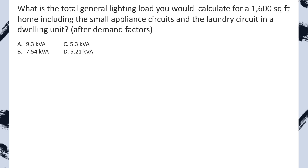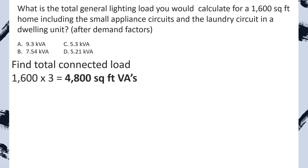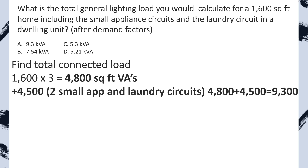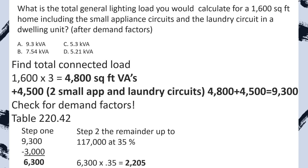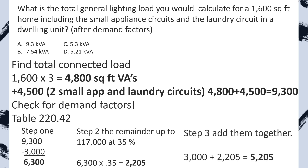What is the total general lighting load you would calculate for a 1,600 square foot home, including the small appliance circuits and the laundry circuit in a dwelling unit after demand factors? Note that on your examination, they will not mention the small appliance and laundry circuits — you just have to know that anytime you're doing the total general load or a whole house load calc, you have to tack on that 4,500 VAs. Step one: find our total connected load. We take 1,600 square feet multiplied by three VAs per square foot, which equals 4,800 VAs. Now we tack on our 4,500 for our two small appliance and one laundry circuits. Then we check for demand factors and head to table 220.42. We take our first 3,000 at 100%, then we take that remainder at 35%, total the two back together, and we select D. Great job.